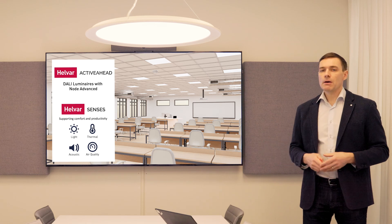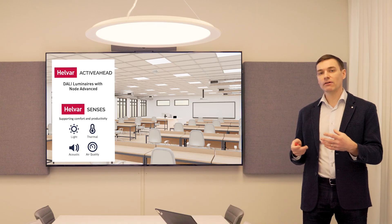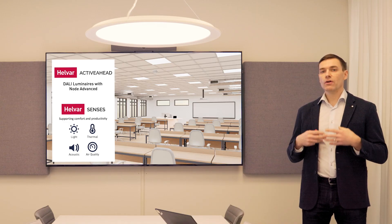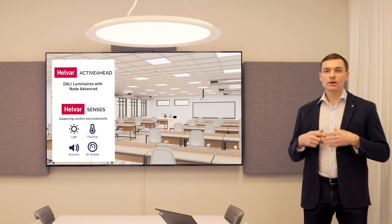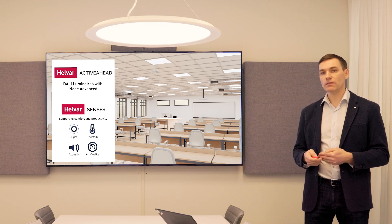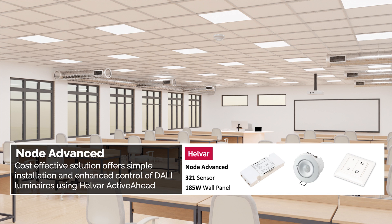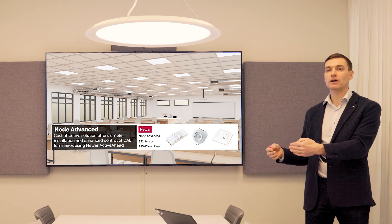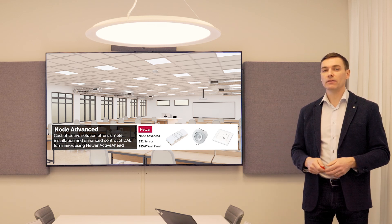You can do one classroom at a time when renovating and then move on to the next. In addition to the ActiveAhead solution, we have selected the Helvar Senses environmental sensor to measure air quality and acoustic levels in the room, so that we can tune the air conditioning to support the learning of the students. Node Advanced together with DALI luminaires and DALI sensors, wireless wall panels — that's a very good package for a classroom: very easy to set up, easy to maintain and modify when needed, for example when different scenes are required.